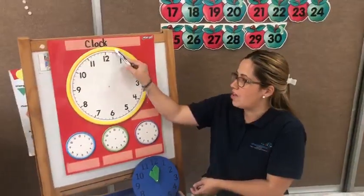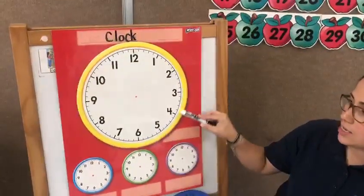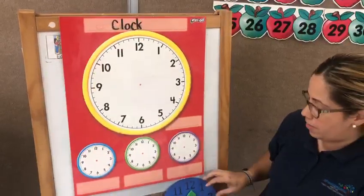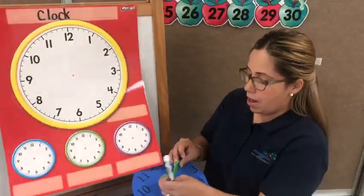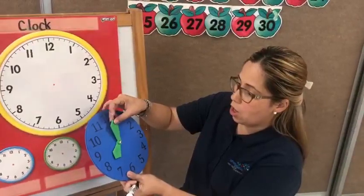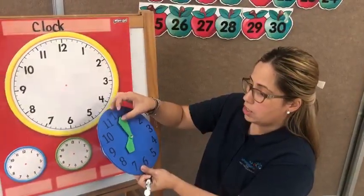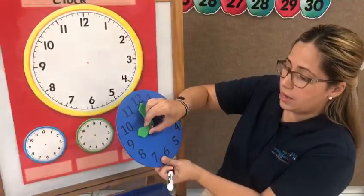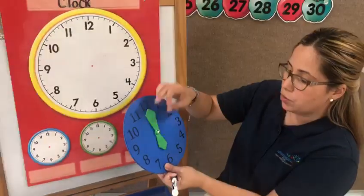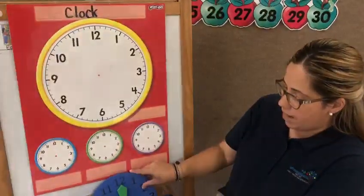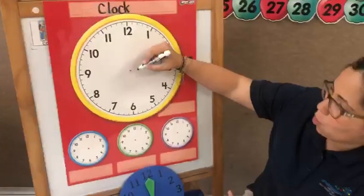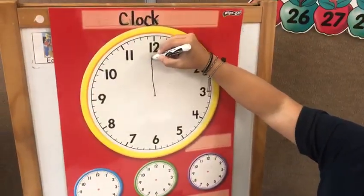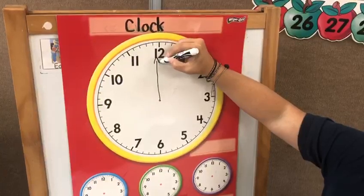Do you guys see the clock? It's like a circle with numbers inside. And normally the clock has some arrows — the long one that is on 12 points the o'clock, and this little one is gonna point to the hours. So I'm gonna draw my arrows. Long one, I'm gonna put it on o'clock, that is number 12.